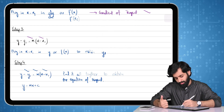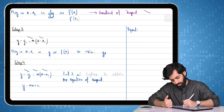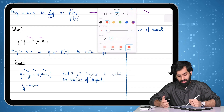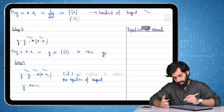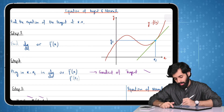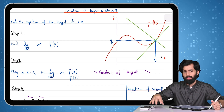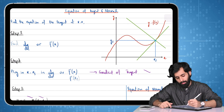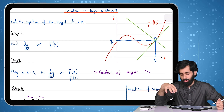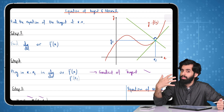Now, what if the question is asking for the equation of normal? Let's first familiarize ourselves with what a normal is. At a given point on the curve, the normal is the line that makes a 90-degree angle with the tangent — it is perpendicular to the tangent at x equals x1. As far as the point is concerned, x1 and y1 remain the same, because both the tangent and the normal pass through the same point.